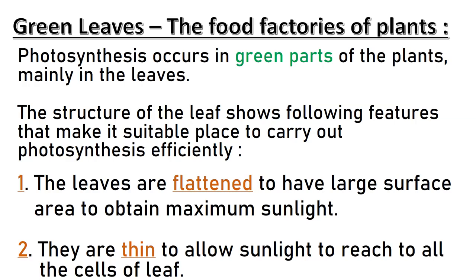The structure of the leaf shows following features that make it a suitable place to carry out photosynthesis efficiently. Number 1: the leaves are flattened to have a large surface area to obtain maximum sunlight. Number 2: they are thin to allow sunlight to reach all the cells of the leaf.